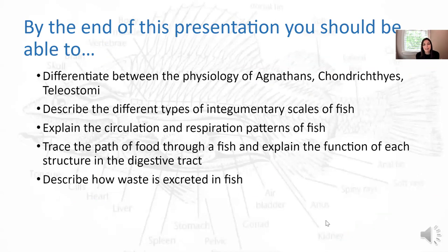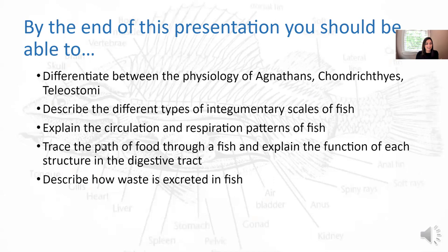Take a minute and make sure you can complete each of the five objectives: differentiate between the physiology of agnathans, chondrichthyes, and teleostomi; describe the different types of integumentary scales; explain circulation and respiration patterns; trace the path of food through a fish and explain the function of each structure; and describe how waste is excreted. I'll leave you with a fish joke — what part of a fish weighs the most? The scales. See you in class!